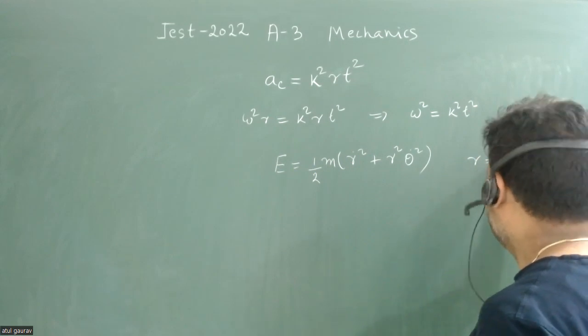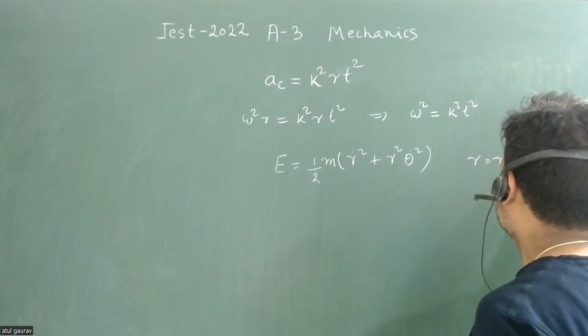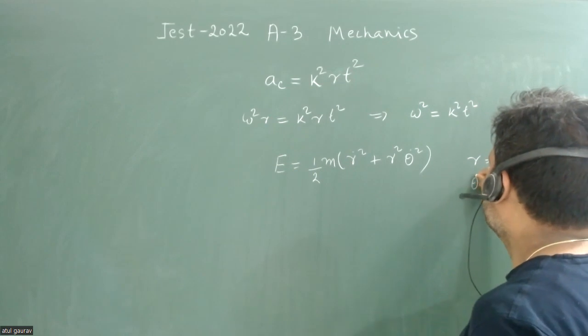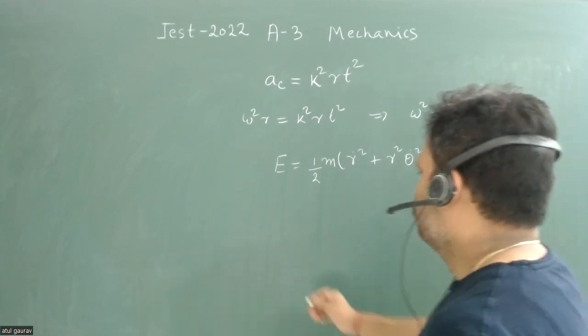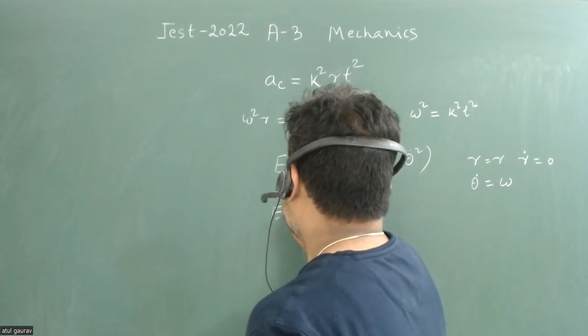So r is constant and ṙ = 0, and θ̇ = ω. So what is our energy?